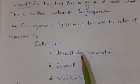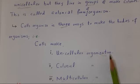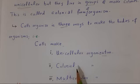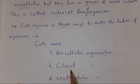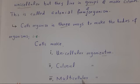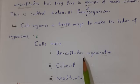Unicellular organization consists of those organisms which are made up of only one or single cell. Colonial organization consists of those organisms which live in the form of a colony. And multicellular organization consists of those organisms which are made up of many cells, and their cells are arranged into tissues, organs, and organ systems. Now we will study these three types of cellular organization one by one.